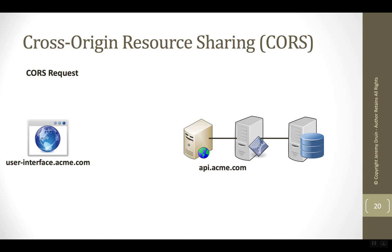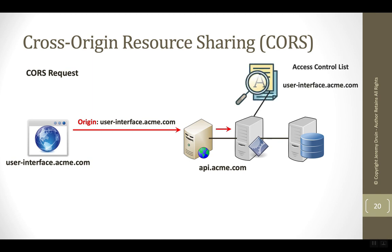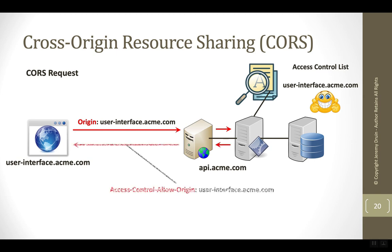Let's take a look at that same request from before, but this time with CORS in play. The user interface sends a request over to the API and, in order to identify itself, it populates the origin request header with its domain name. The API can then look up the domain name on its access control list to find out whether or not to give permission. In this case, a record is found, and api.acme.com includes the Access-Control-Allow-Origin header in the response so that user interface is allowed to read the data.